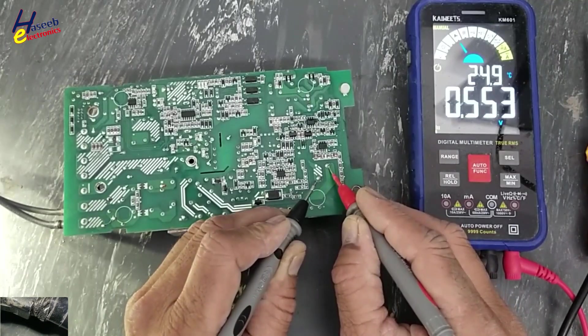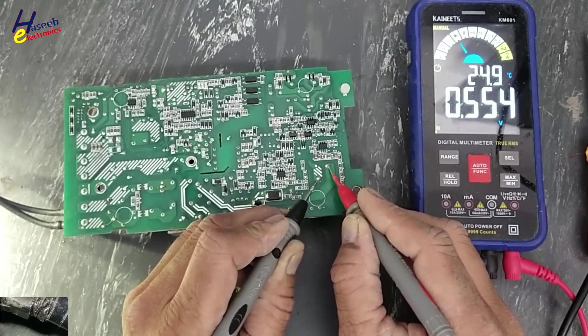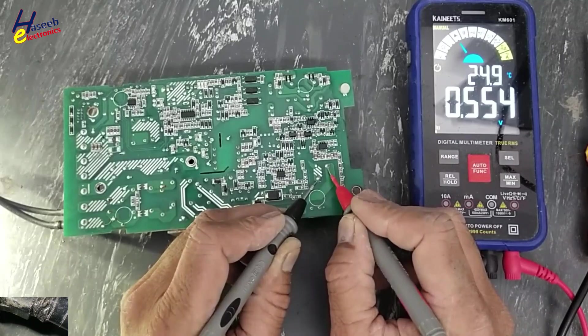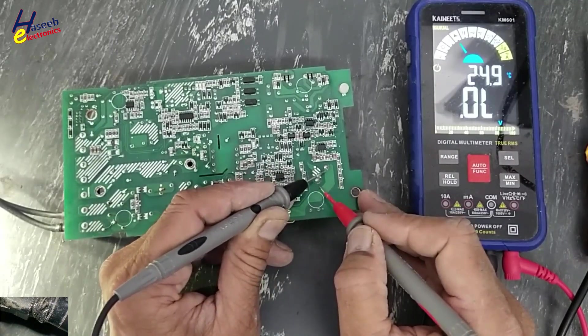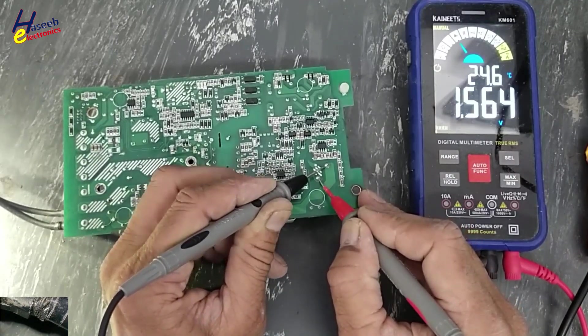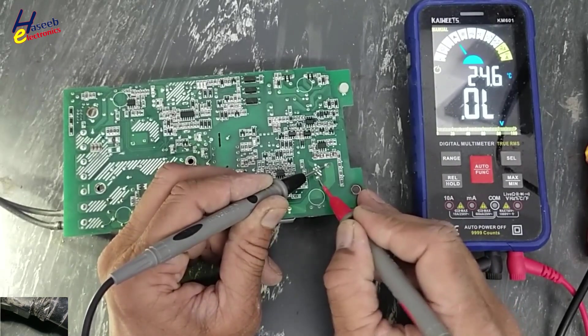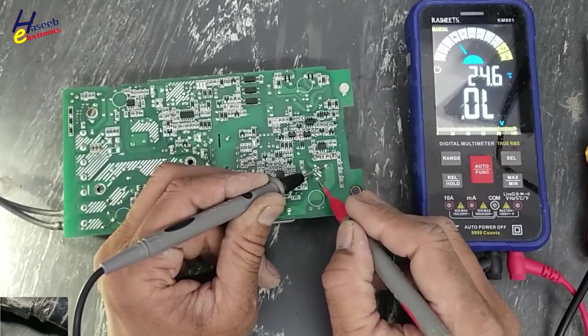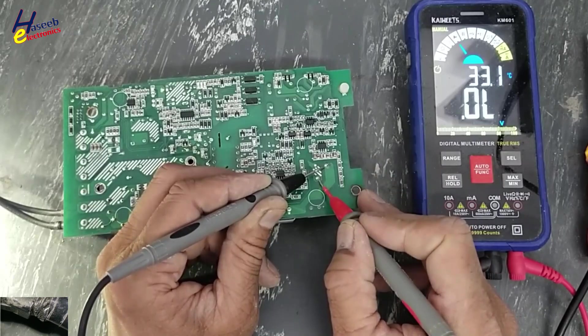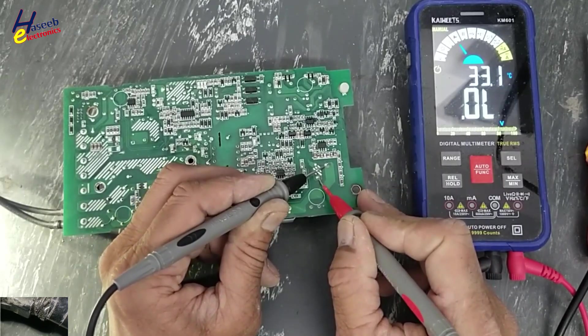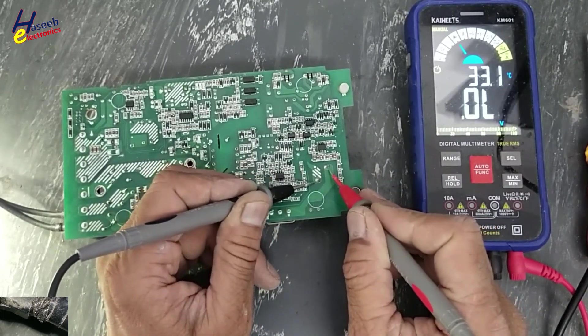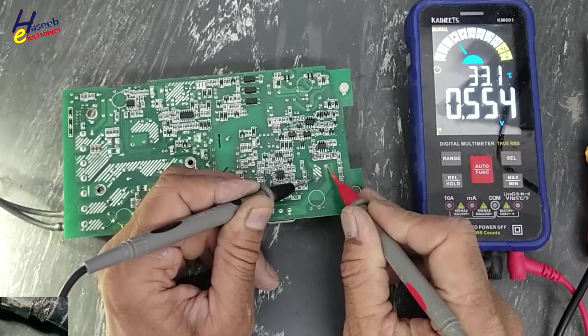Diode, one side diode, black lead add positive terminal. This side open, good. Now this condition is good. Red lead add positive terminal, black lead add negative terminal. It's open circuit and this side one diode.